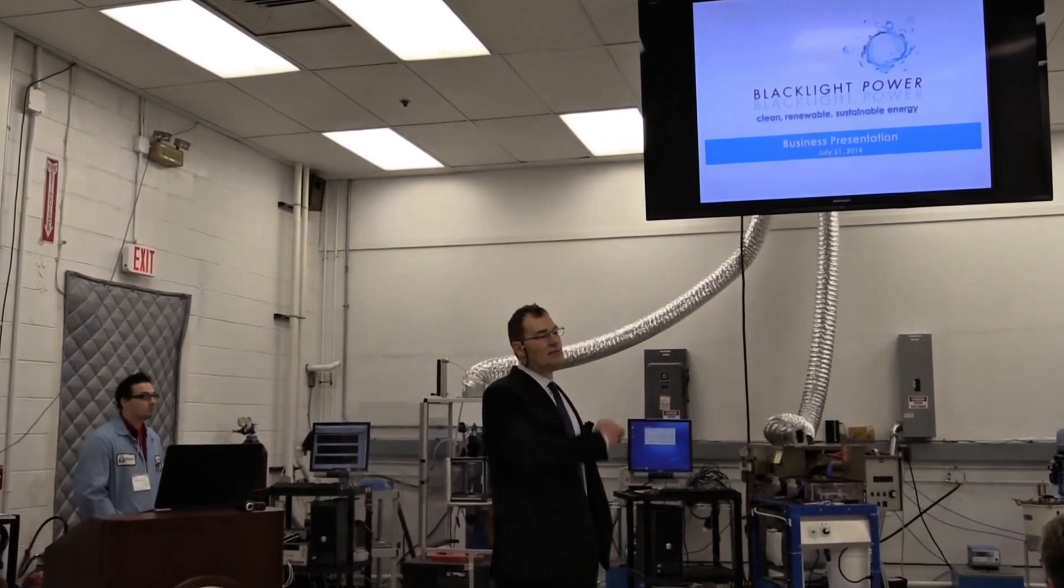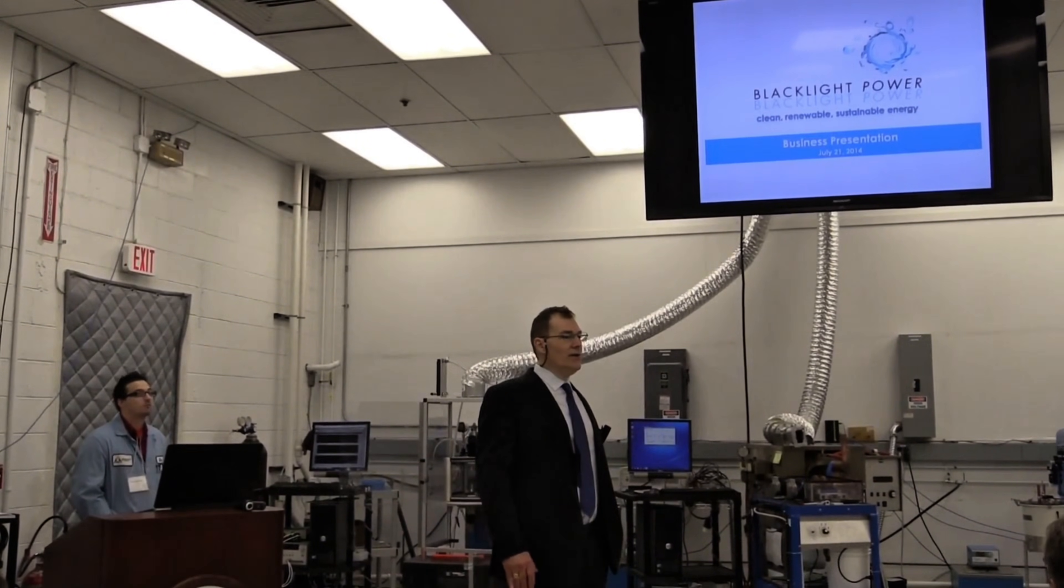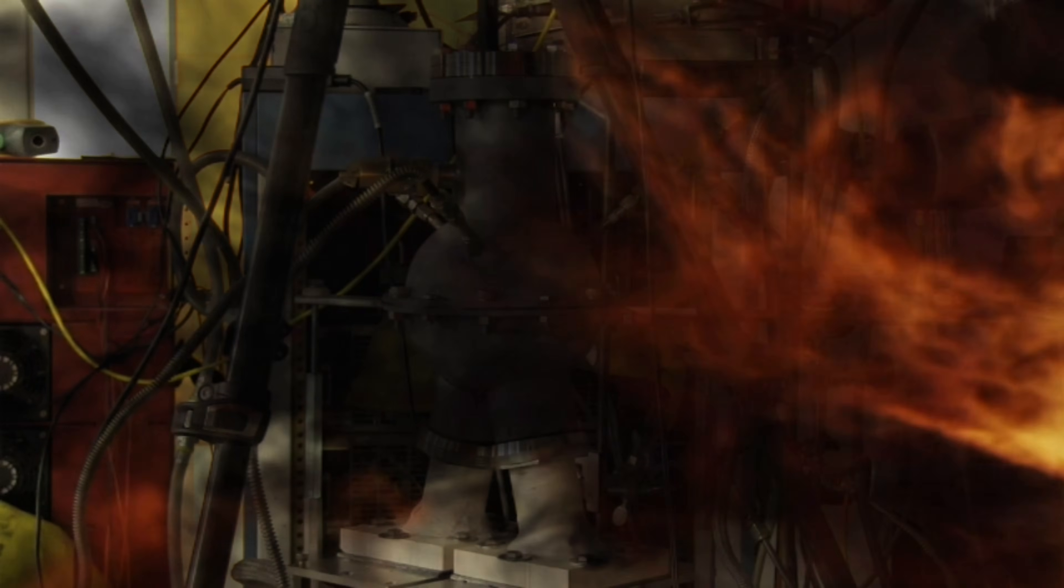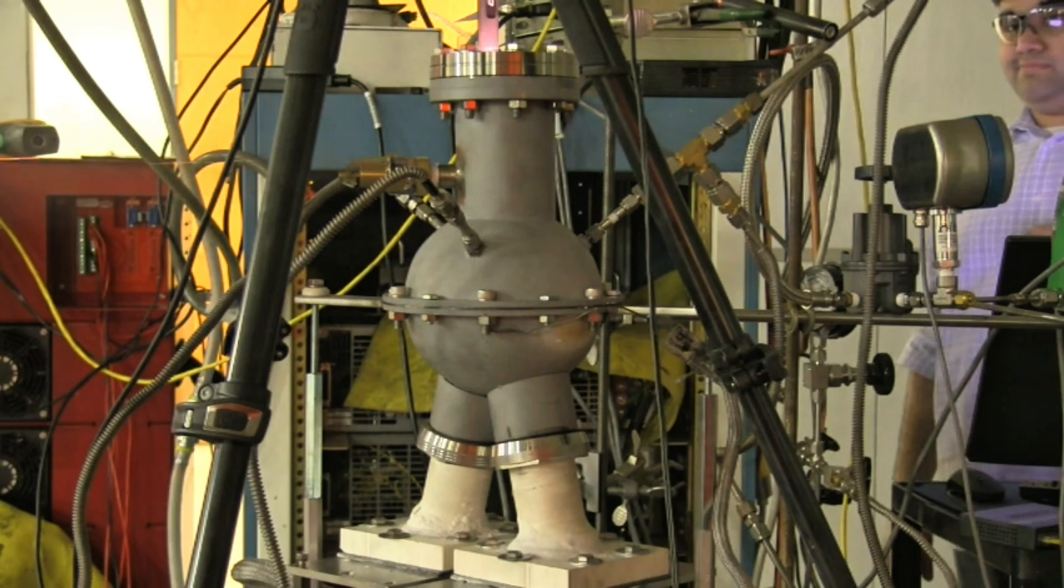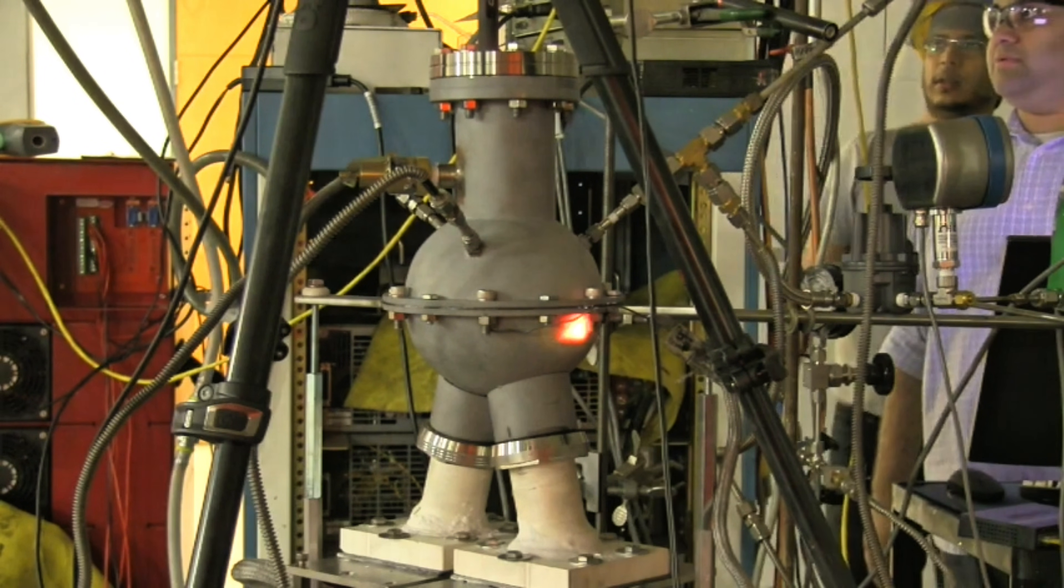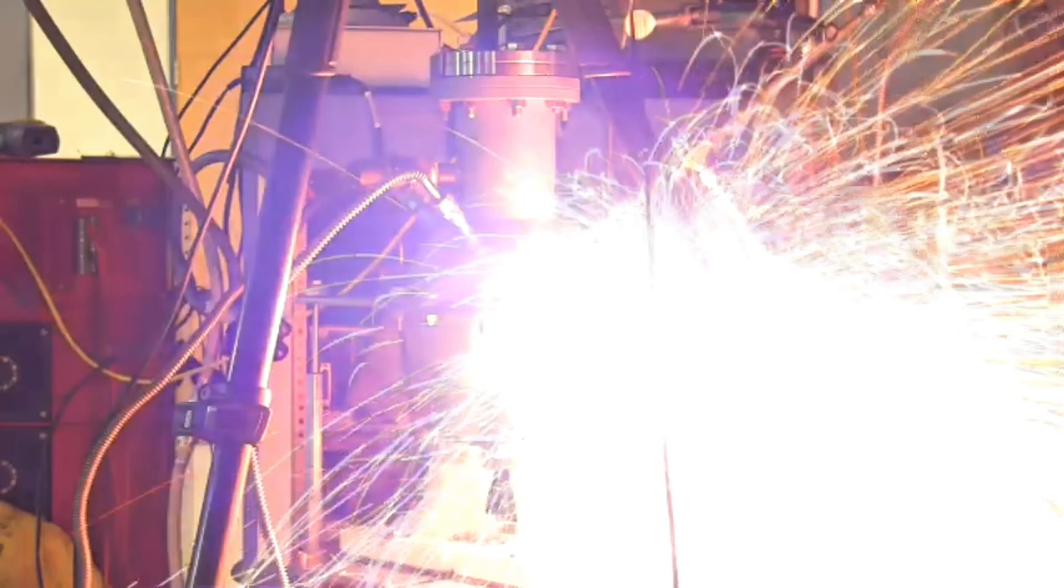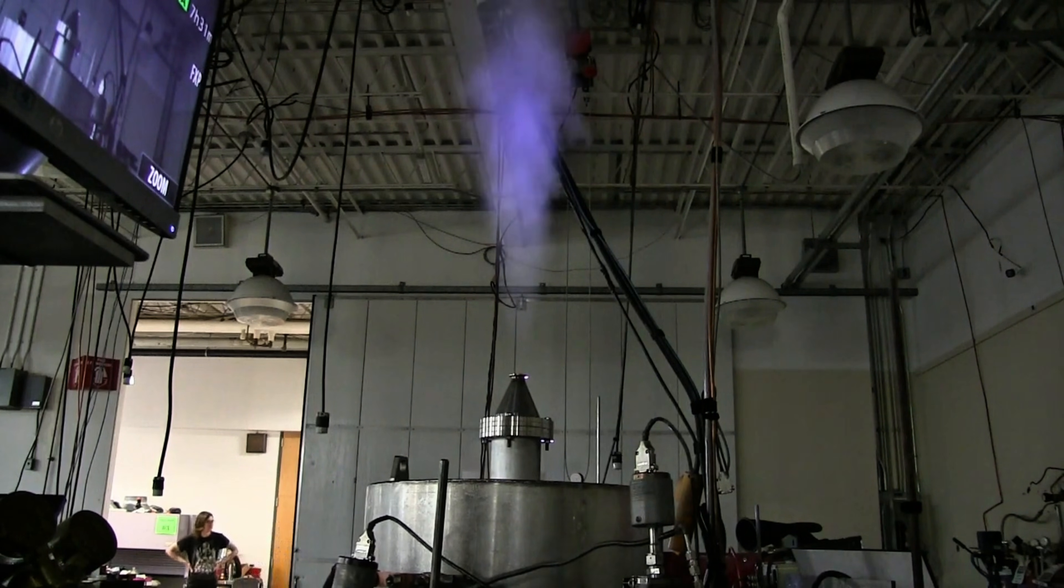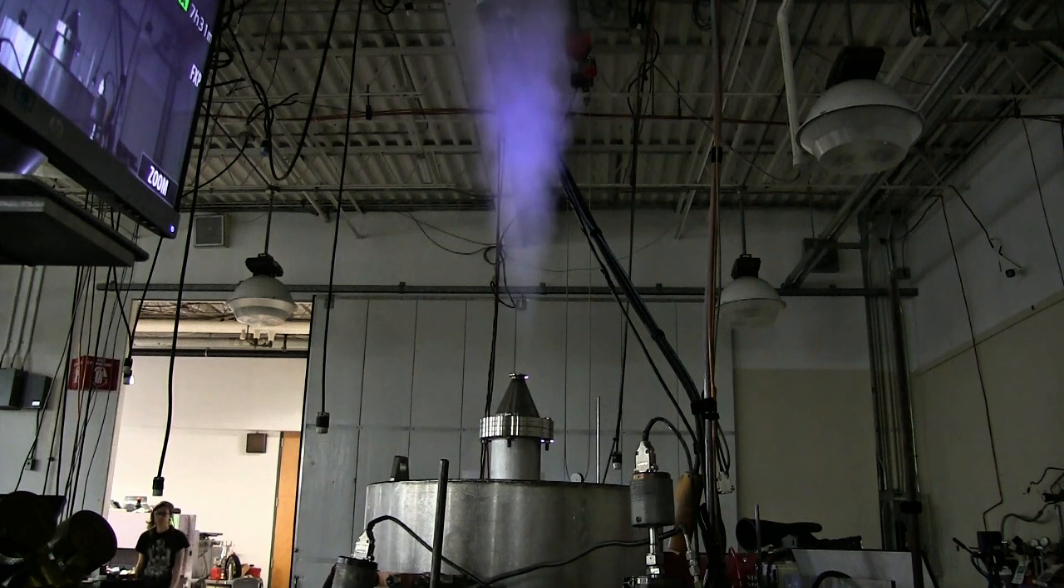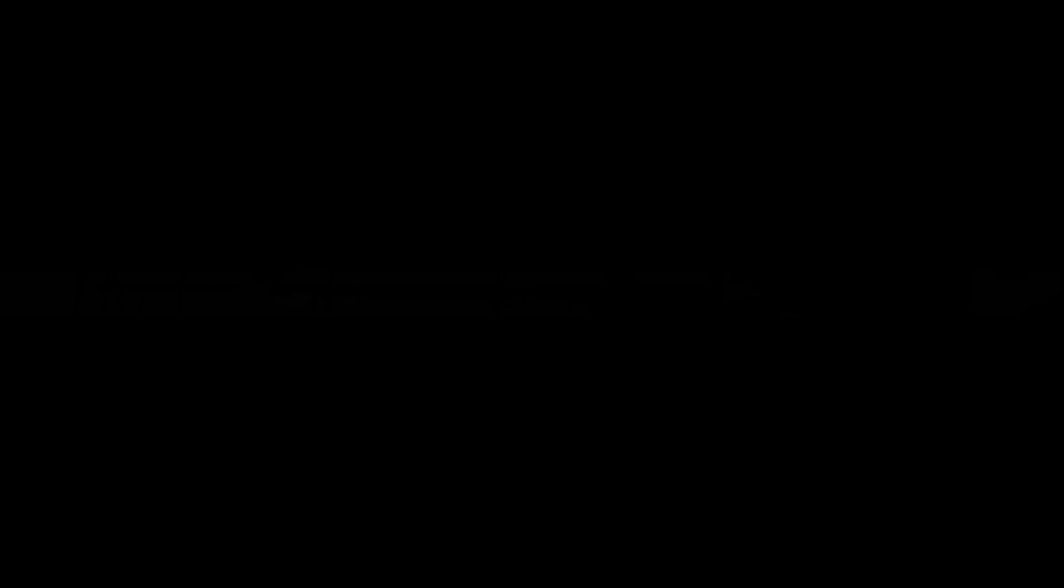Your home becomes a self-sufficient fortress, immune to grid failures or price hikes. For a family, that means thousands saved yearly, redirected to vacations, gadgets, or investments. And scalability? Stack units for bigger needs, or go off-grid entirely. It's empowerment on steroids, turning consumers into producers, democratizing energy like the internet democratized information. But the conspiracy angle? If this hits homes, it collapses monopolies. No wonder it's been held back. Yet, the tide is turning. With climate urgency and energy independence cries, this could be the spark that ignites a global shift.